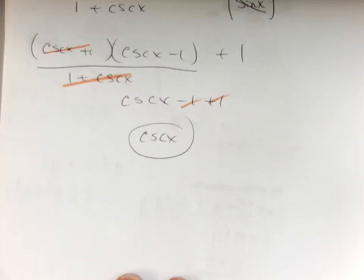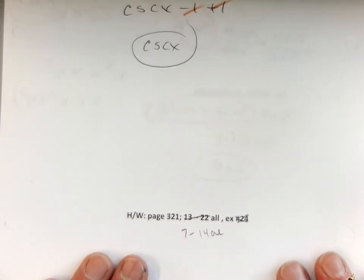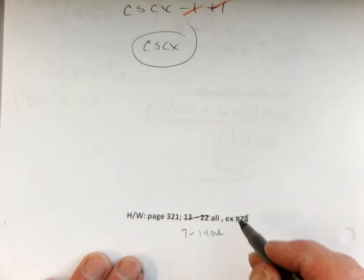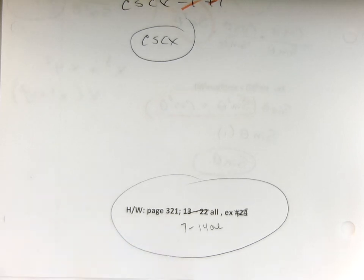Now, the only way to get good at these, the only, only, only way to get good at these is to practice. So, I changed it to seven to 14, because I'm going to make this a three-day lesson, because we need to practice. You've got to get your identities out. You've got to try. I will help if you get stuck. I could do problems all day, but if you do them, it'll benefit you.